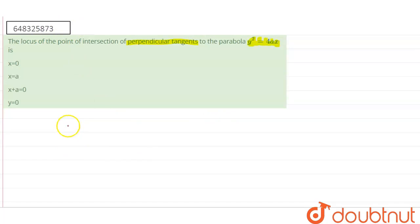We have equation of parabola that is y square equal to 4ax and equation of tangent to parabola is x is equals to m y minus am square.